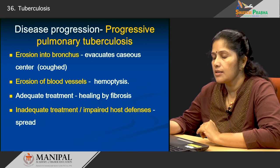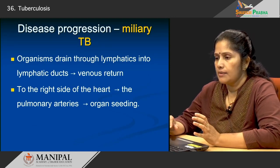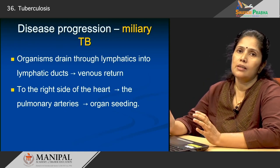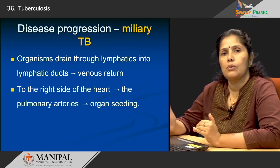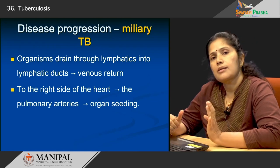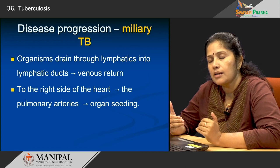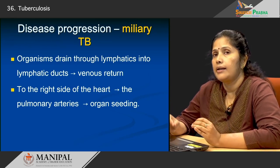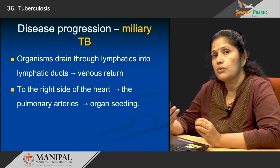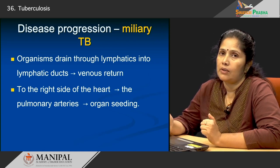How does the disease progress into the miliary form? This organism drains through the lymphatics into the lymphatic ducts, which go into the venous return of the body. From the venous return it goes to the right side of the heart, then to the pulmonary arteries, and once it reaches the pulmonary arteries it is easy for the blood — and the bacilli — to disseminate into the systemic circulation, seeding into many different organs.